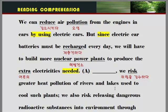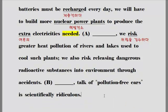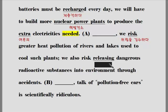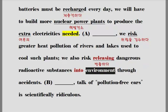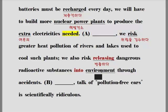We also risk releasing dangerous radioactive substances into the environment through accidents. 'Release' — 방출하다라고 하는 뜻입니다. 'Release'를 'into'라는 전치사와 연결시켜 보면 '무엇을 무엇에 방출하다'는 의미가 되겠죠. 'Radioactive' — 방사능의. 'Substance' — 물질. 'Environment' — 환경. 위험한 방사능 물질을 환경 속에, 'accident' — 사고를 통해서 방출할 수 있는 위험을 감수하게 된다.